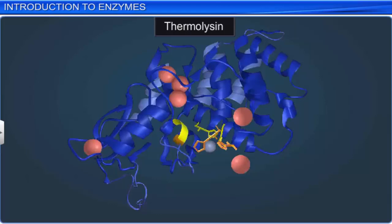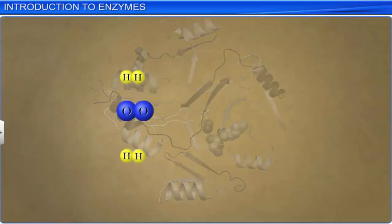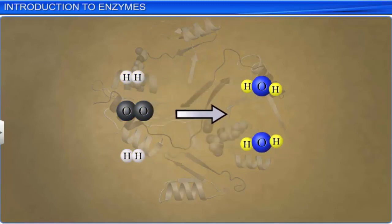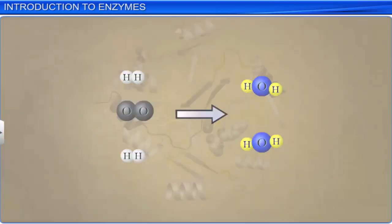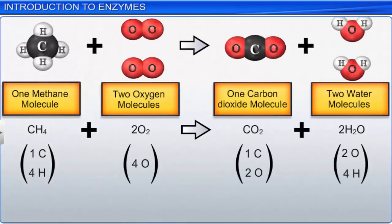To understand the working of enzymes, we'll begin by learning more about chemical reactions. Chemical compounds undergo physical and chemical changes. When a compound changes shape without breaking its existing bonds, it is said to be a physical change. For example, ice melting to form water. On the other hand, when the bonds in a compound are broken and new bonds are formed during transformation, it is called a chemical reaction.